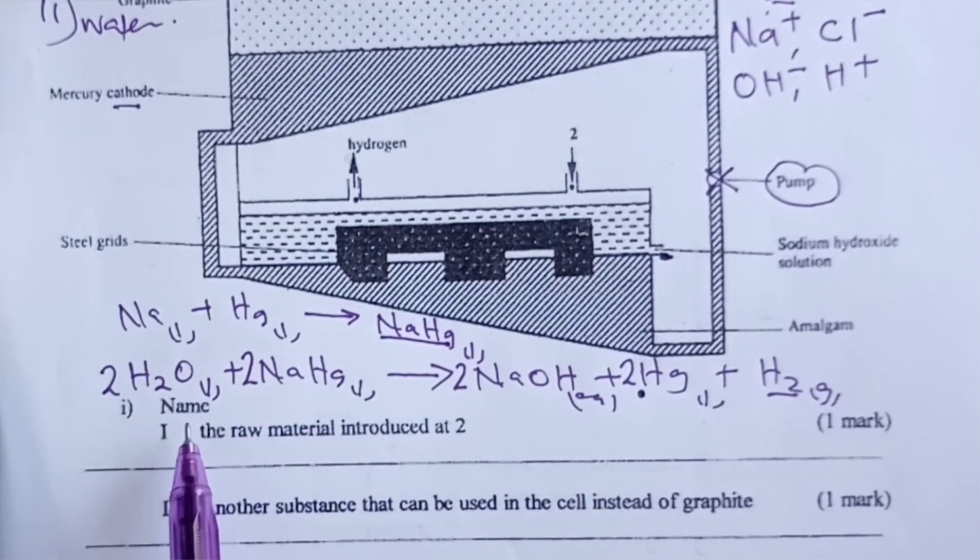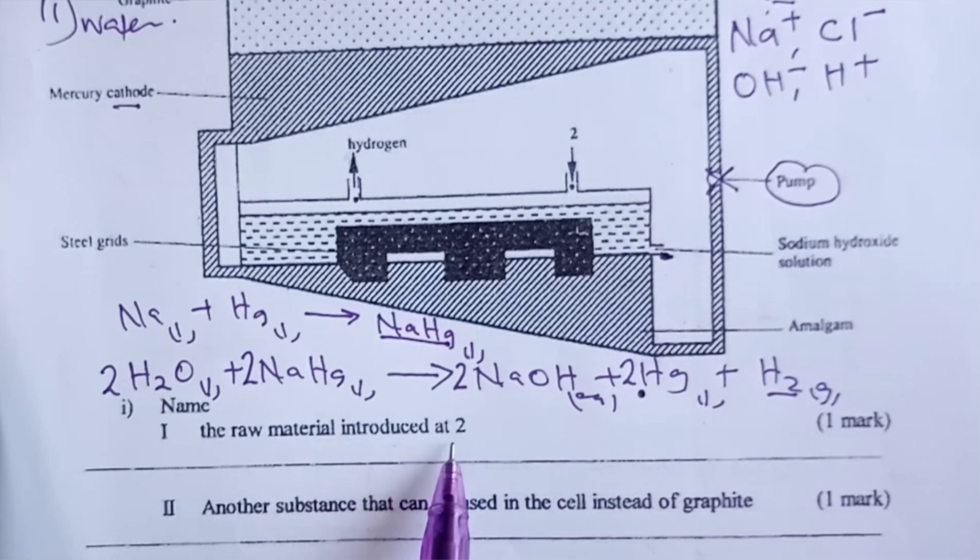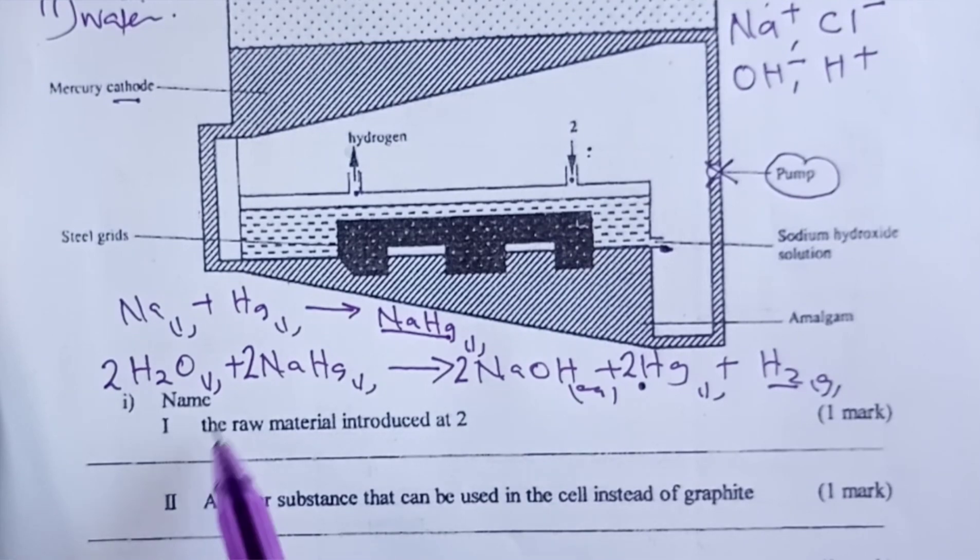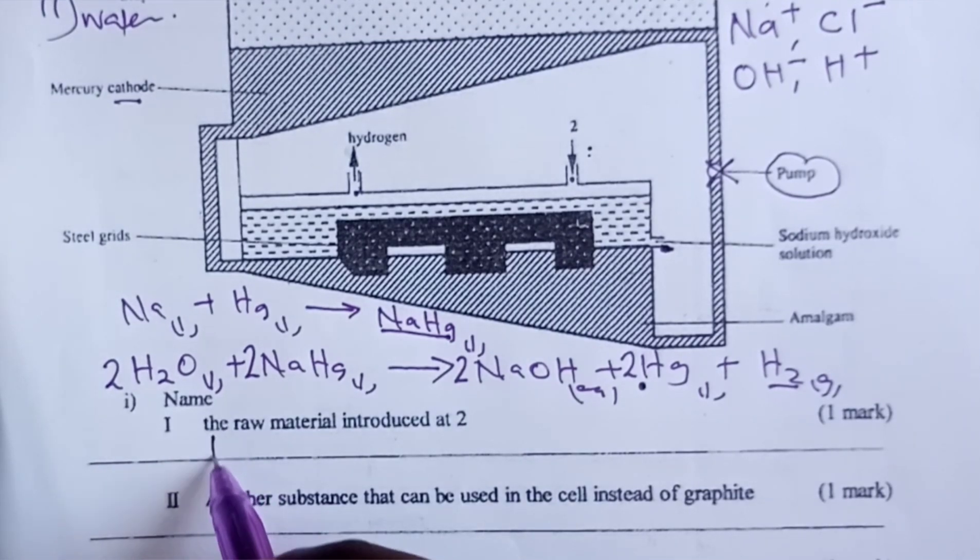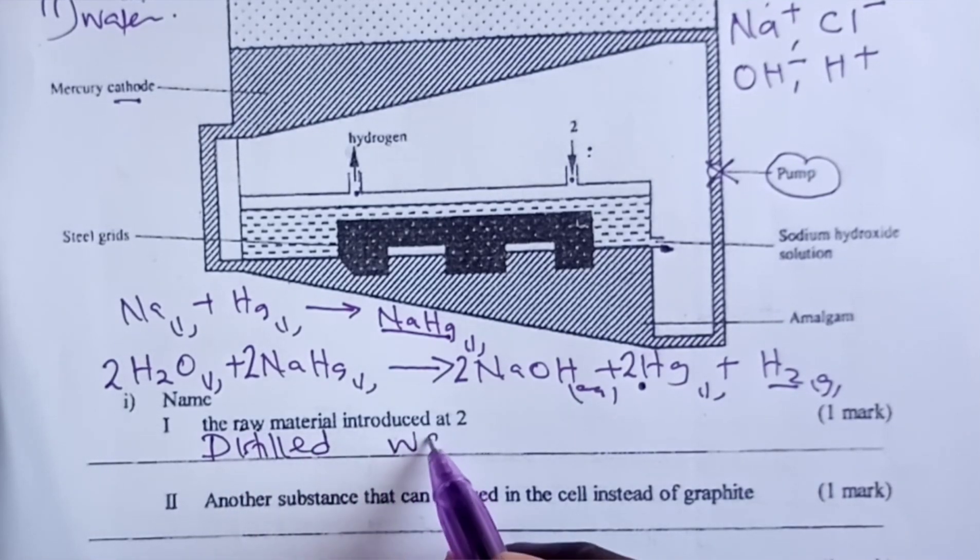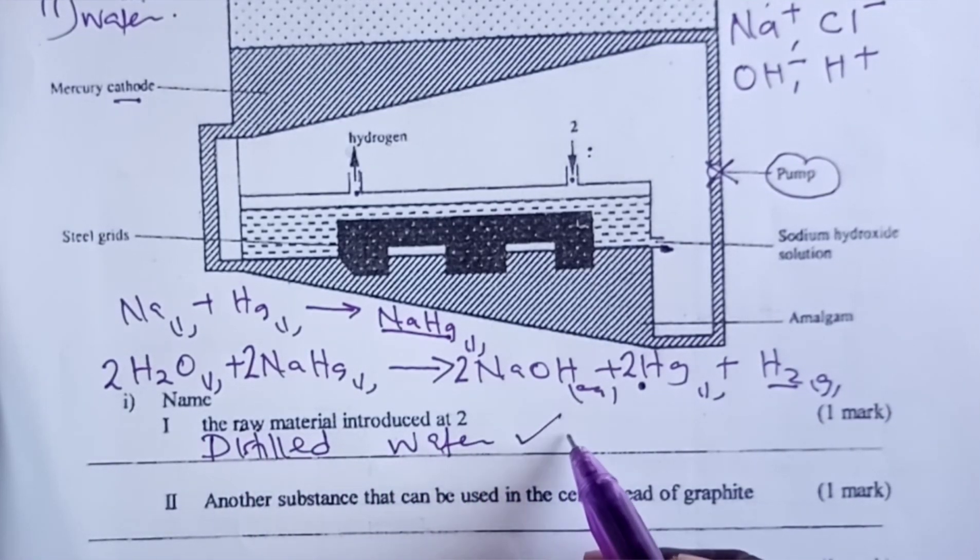The first question for the year 2000: we are asked to name the raw material introduced at opening two, and we have just talked about it. The answer expected here was distilled water for one mark.